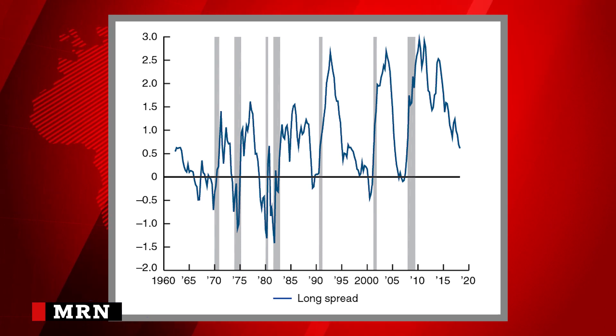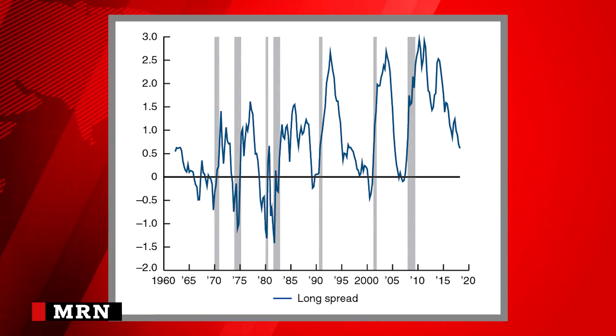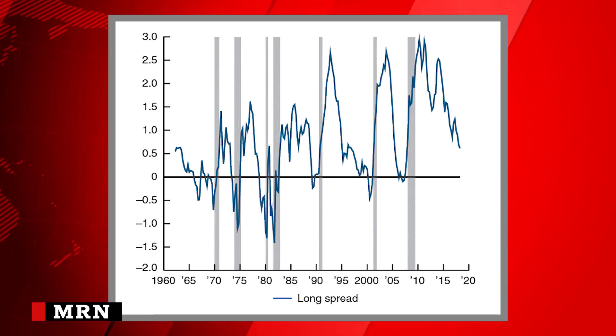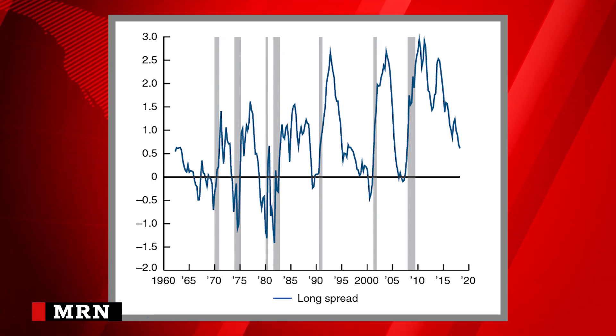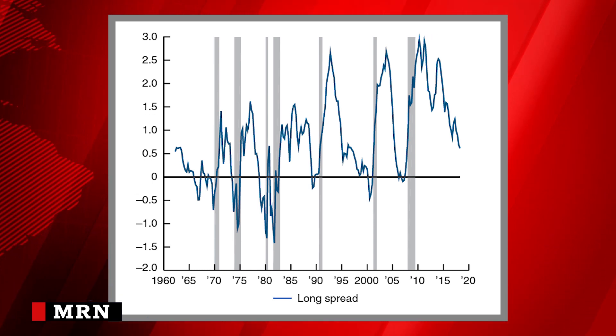The shaded areas on the graph indicate periods of recession. You will notice that the yield curve slope goes into the negative right before recession. Since the 1970s, that dip into the negative is what is known as an inversion of the yield curve — when short maturity interest rates exceed long maturity rates. This is typically associated with a recession in the near future.